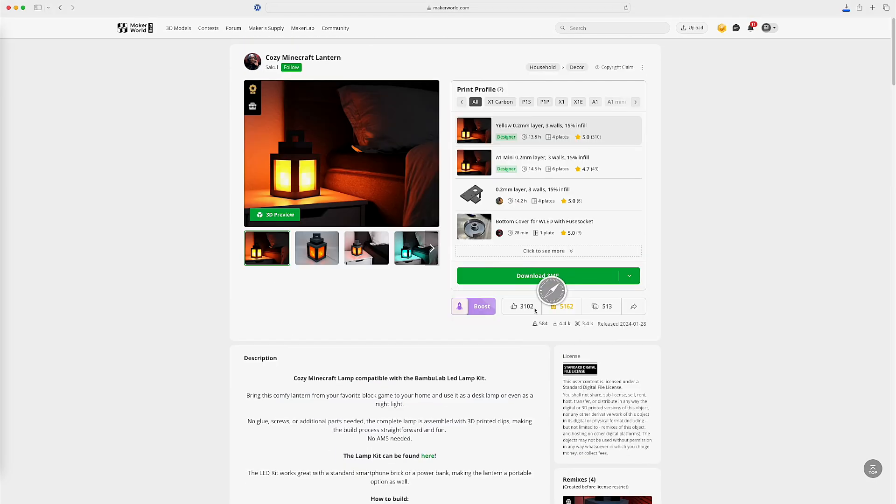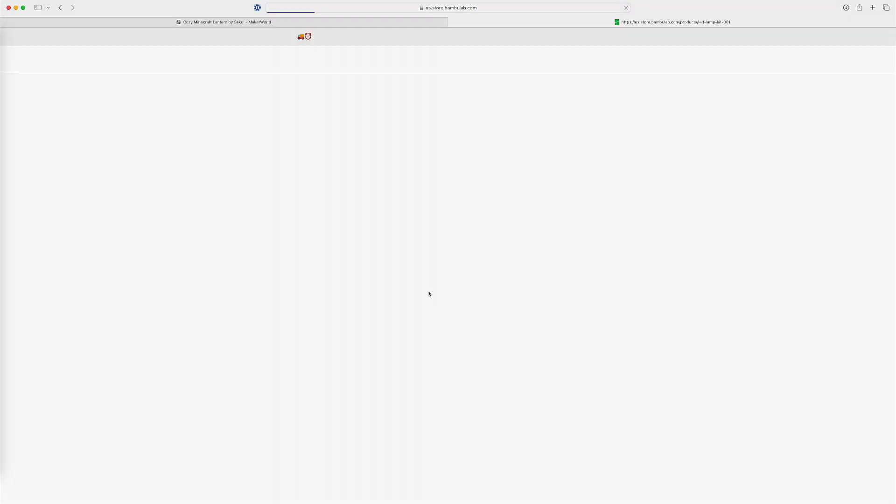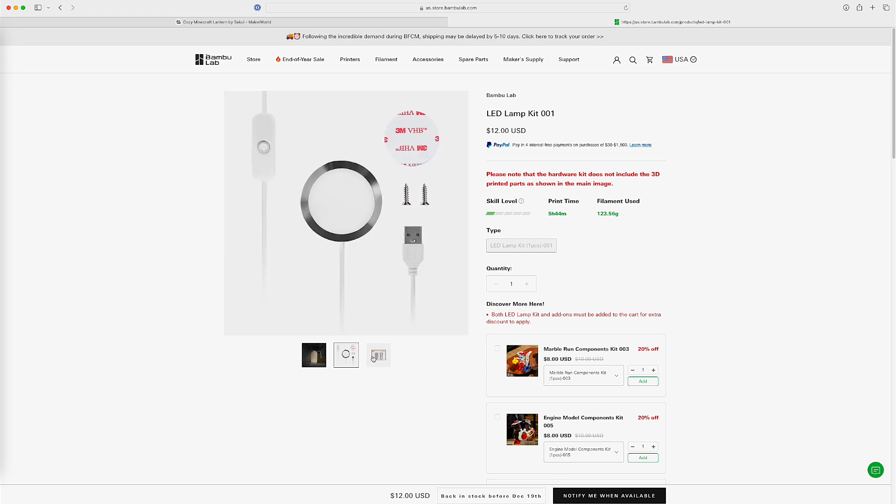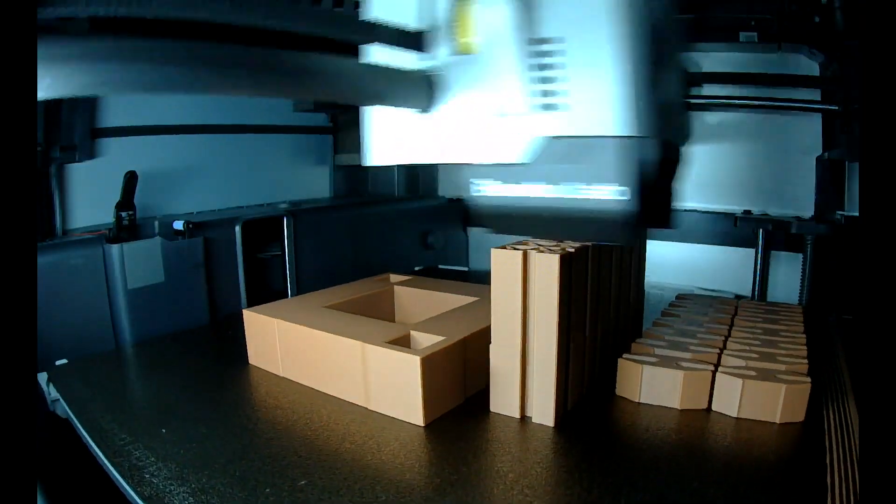First, head over to makerworld.com. The link is below to download all the files for this print, then follow the link to order the LED light. Then print all the files out in the correct colors.